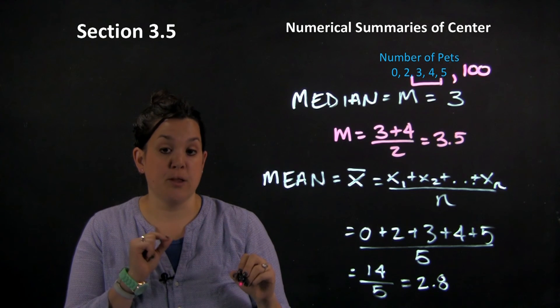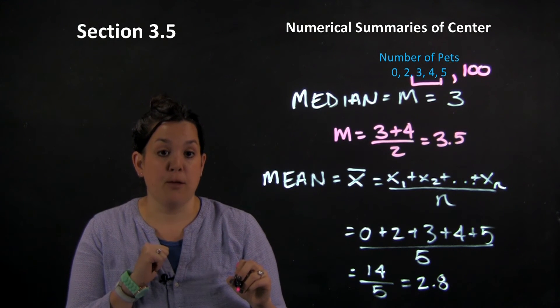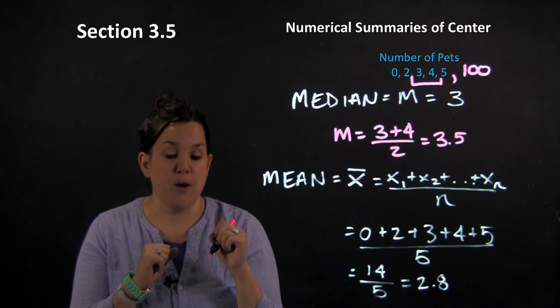add them together and divide by 2. So I have a median of 3.5 here.